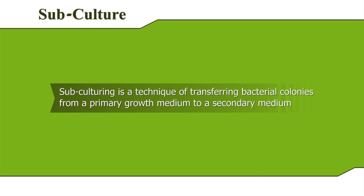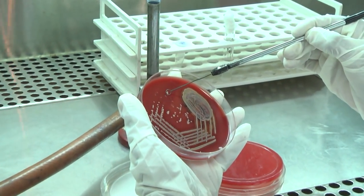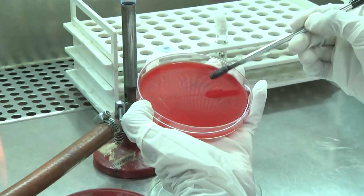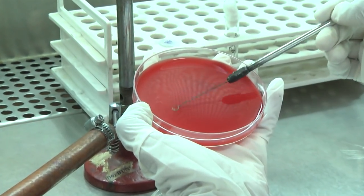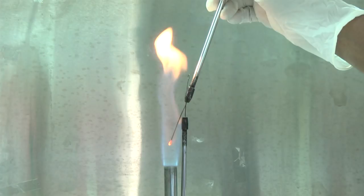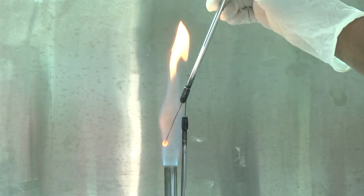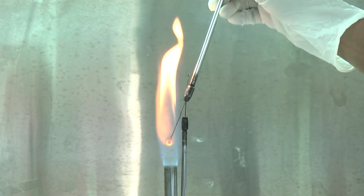Subculturing is basically a technique of transferring bacterial colonies from a primary growth medium to a secondary medium. Take a sterile loop and load it with a portion of an isolated colony on the primary medium. Transfer it to a suitable medium by the streak method described earlier. When making transfers during subcultures, it is advantageous to flame the loop between each set of streaks, which avoids over-inoculation and ensures the growth of isolated colonies.